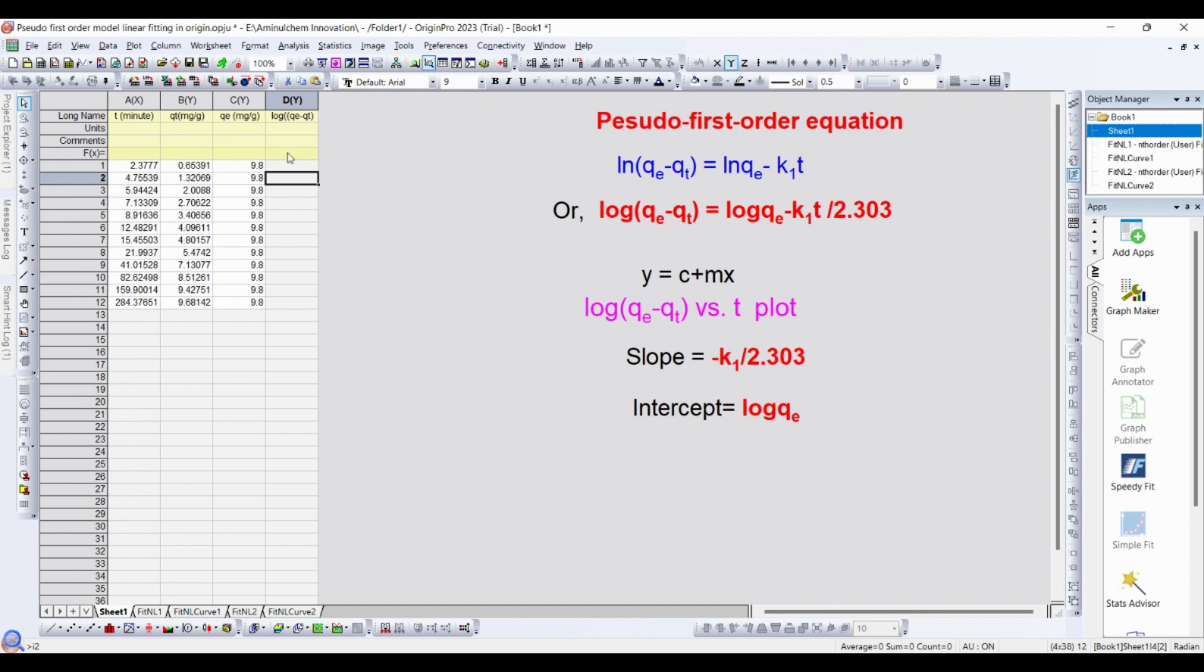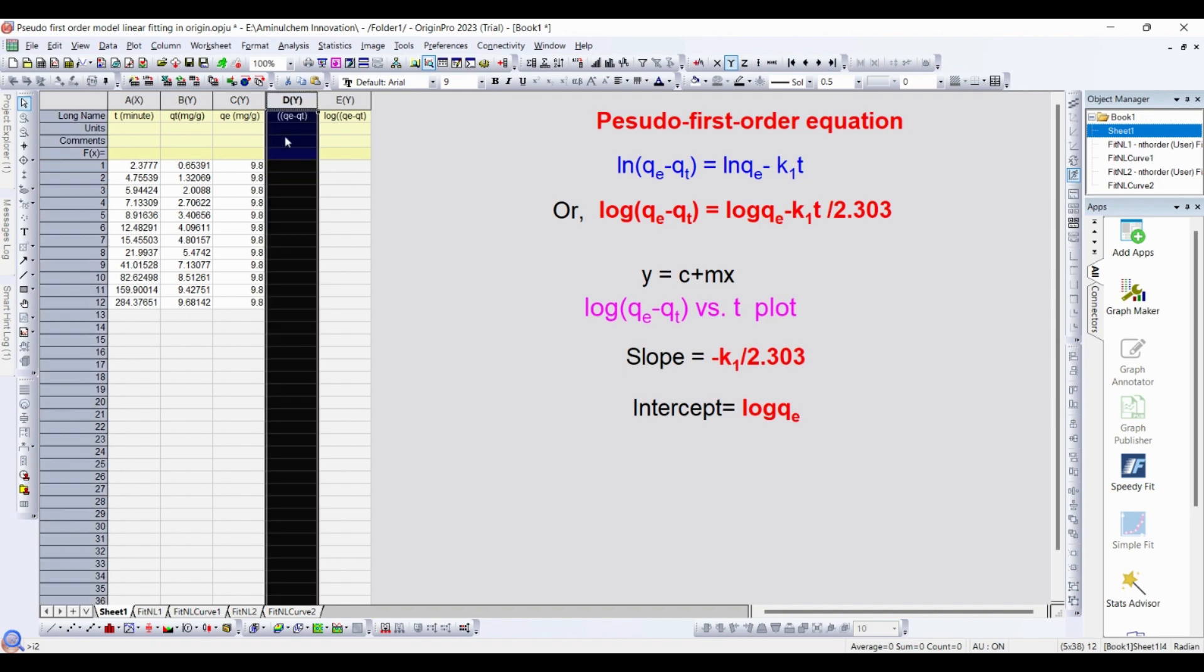Then you need to calculate qe - qt. In order to do that, at first you need to calculate qe - qt which is, right click. Select this and right click. Then set column values.